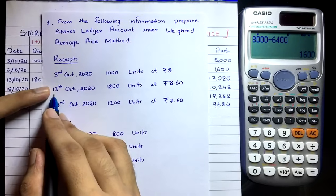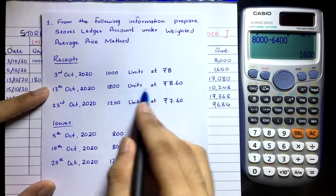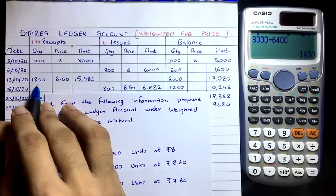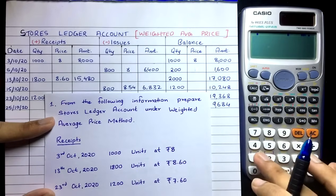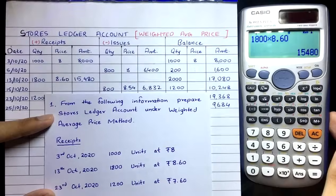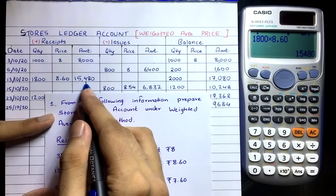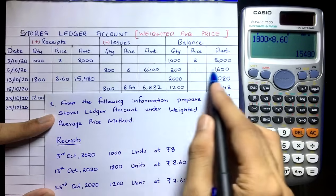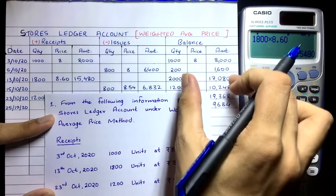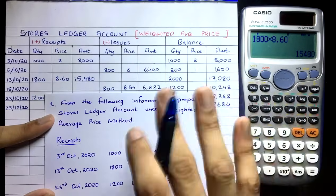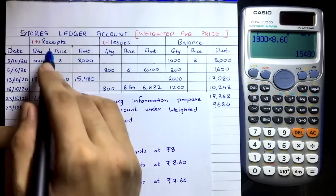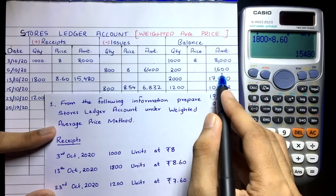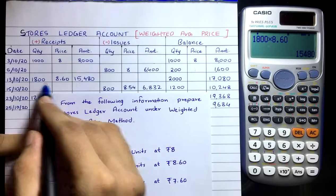On 13th October, we receive 1,800 units at price ₹8.60. Enter in the receipts column. Cost: 1,800 × 8.60 = ₹15,480. In the average method, when a receipt arrives, we combine it with whatever is in the balance column — unlike FIFO and LIFO where we list them separately.